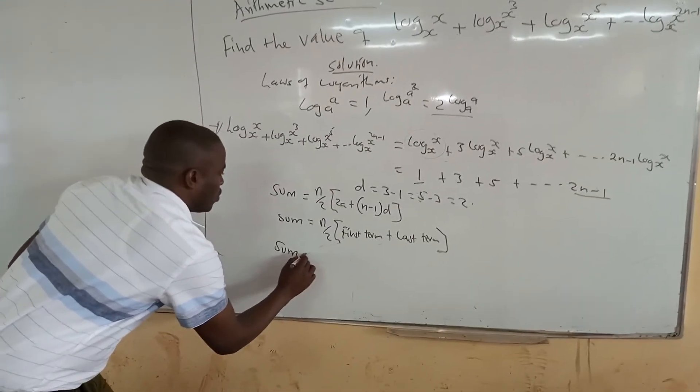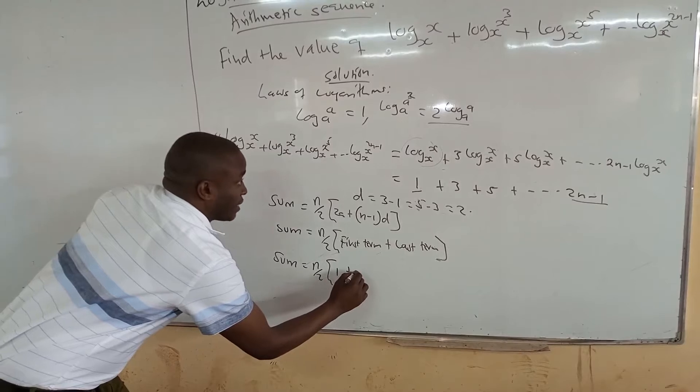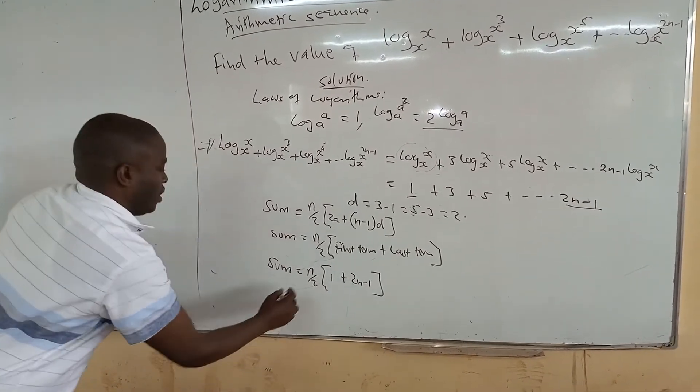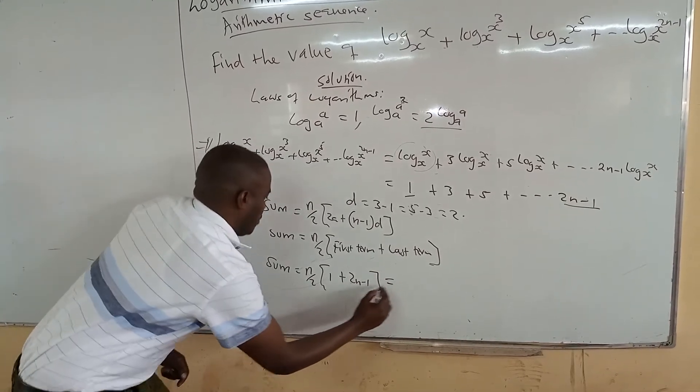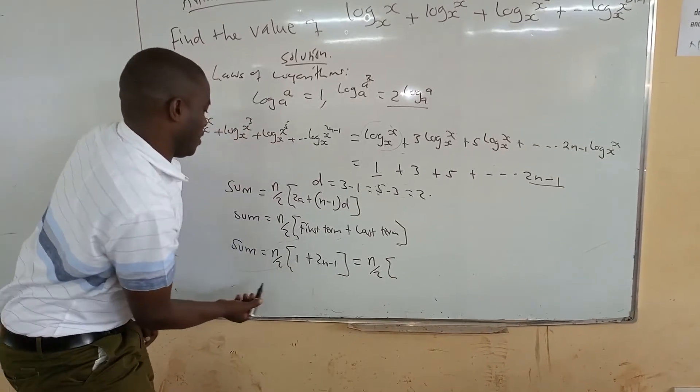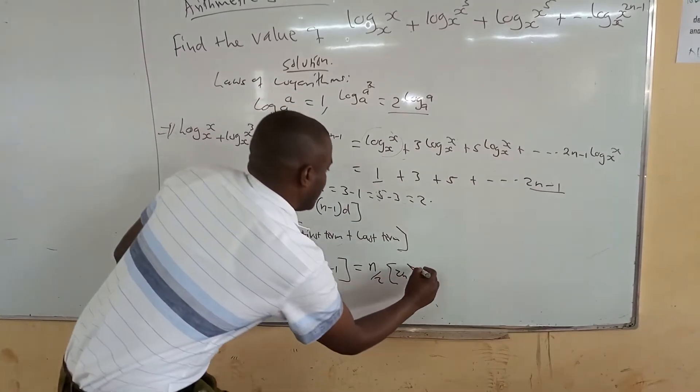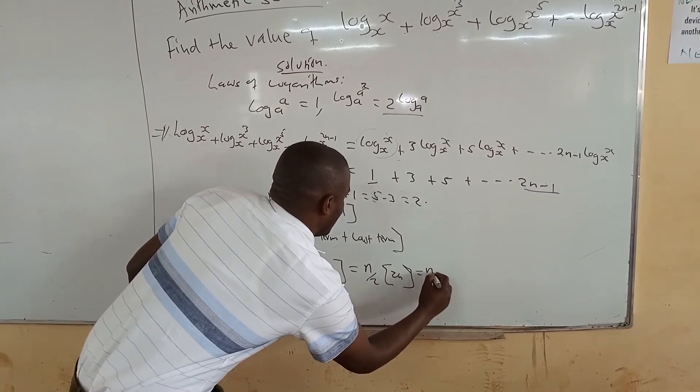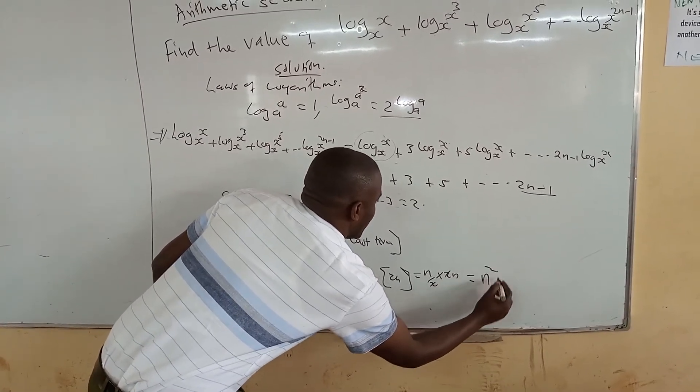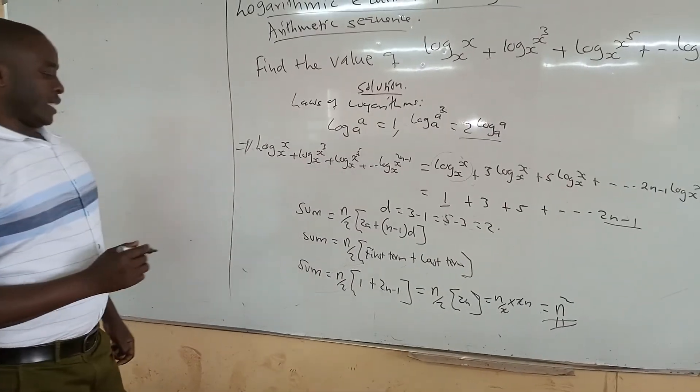So the sum which is our value equals to n over 2 into first term, we know it is 1 plus last term is 2n minus 1. So this is equal to n over 2 into this 1 minus 1 is 0, that is into 2n. So 2n, this is the same as when you multiply, it is n over 2 times 2n, 2 under 2, so it becomes n squared.